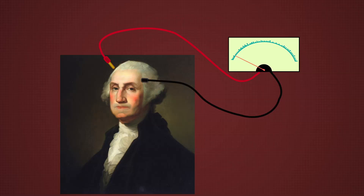In 1954, two mathematicians designed an ingenious way to measure the power of an individual in any yes-no voting system. It works by simply counting the proportion of times a person's vote changes the outcome from a losing position to a winning position.